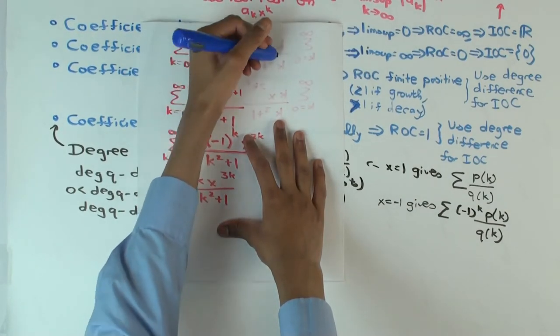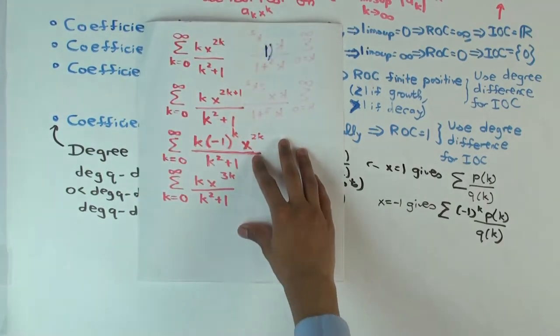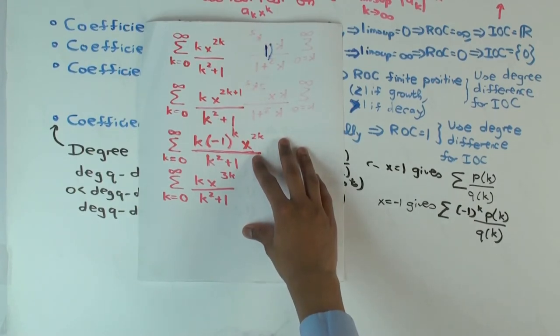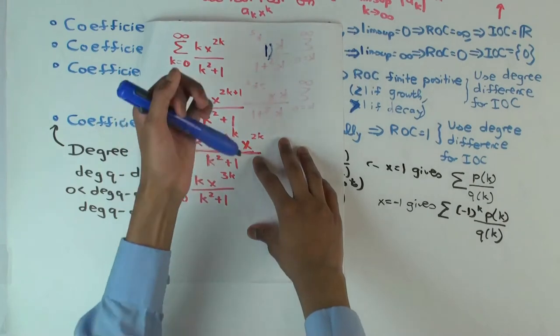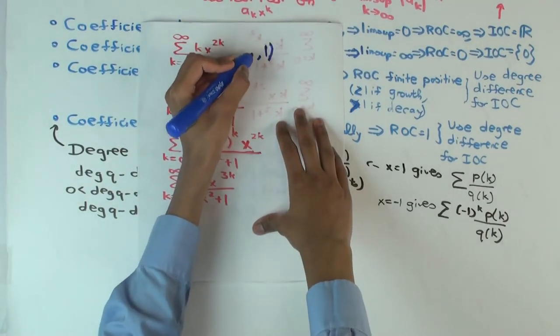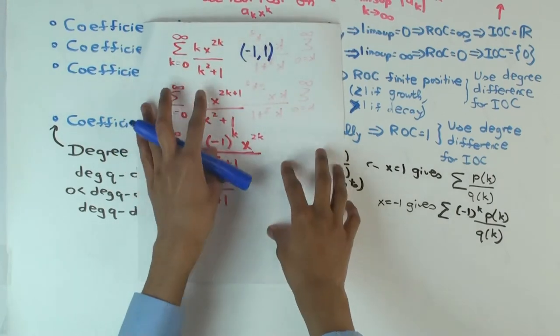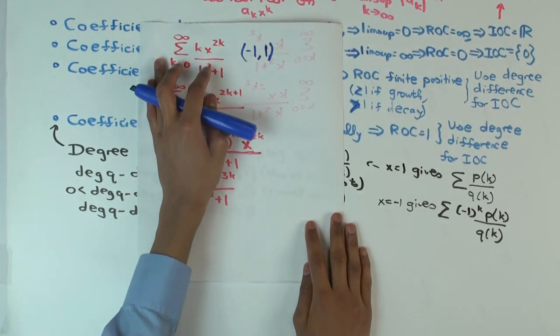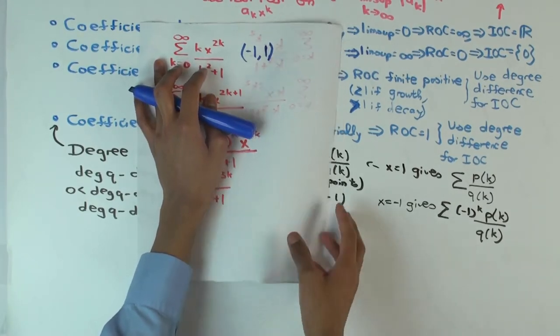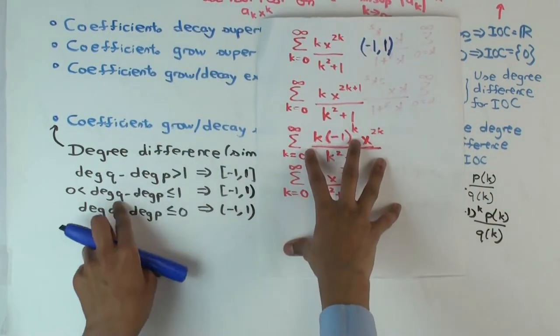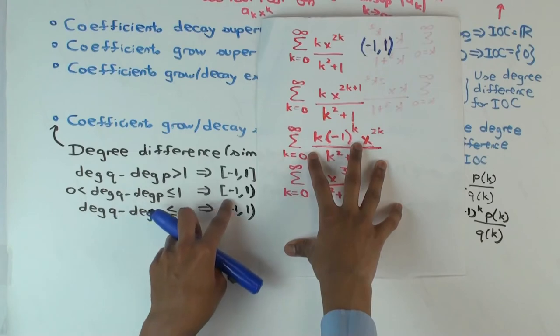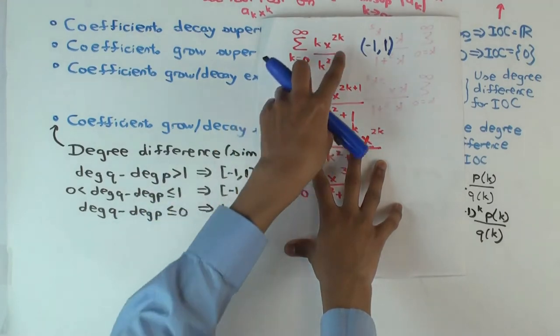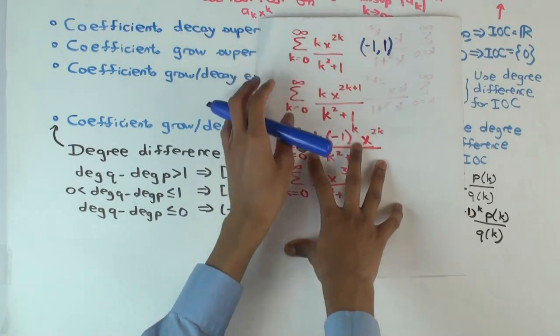Good. What about, what else? Are there any other endpoints which are included? Minus one is not included either. Why not? Because the 2k eliminates the alternating sign. And so, because you have 2k here, even when you plug in minus one, you don't have any sign alternation. So therefore, the series doesn't converge at minus one either. And so, that's why I said that you cannot nicely use this one. Because if you just said degree q minus degree p is one, so the interval equals minus one closed. But that happened when the exponent was k and you had alternation. And now you don't.